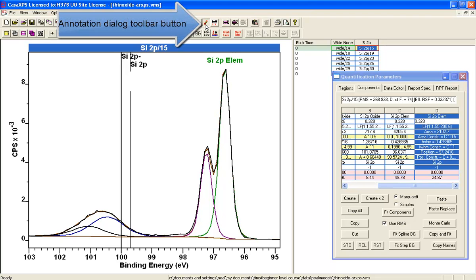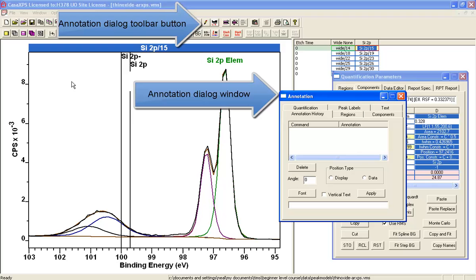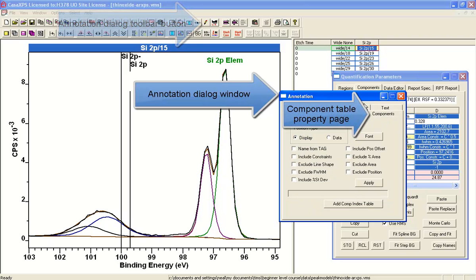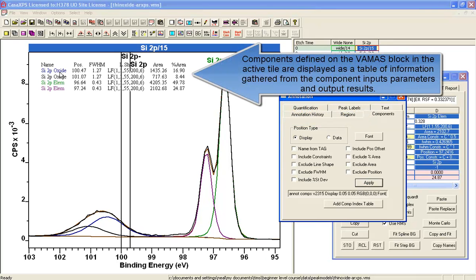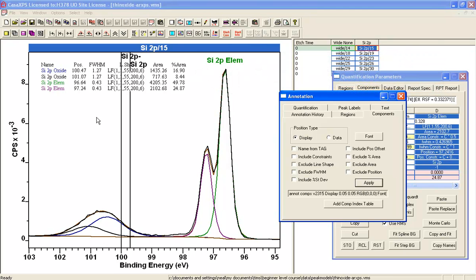We can see a table that will be positioned over the data by going to the annotation property page components, and if I just say apply, you can see that I now get a table showing me the percent area taken from these peaks, the area itself, the line shape that was used, full width at half maximum, and the position. So there's an example of a very simple peak fit that can be applied to data of this form.